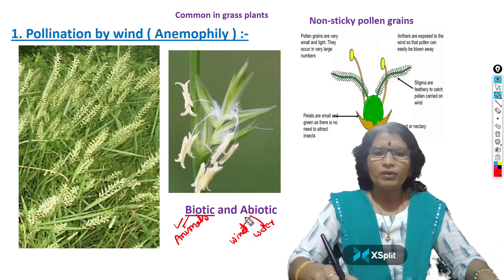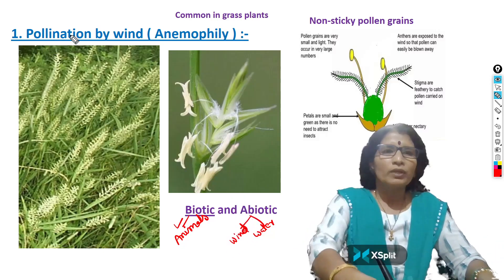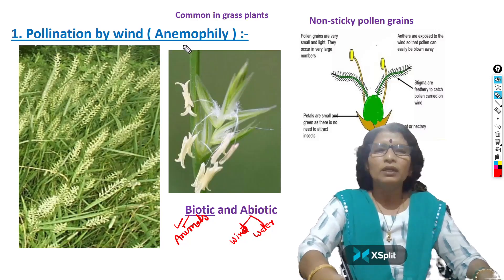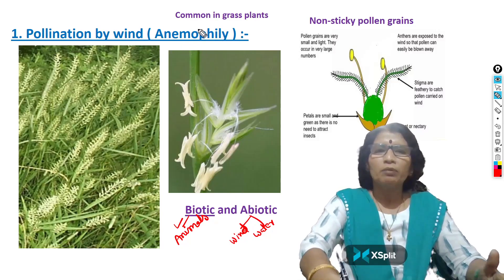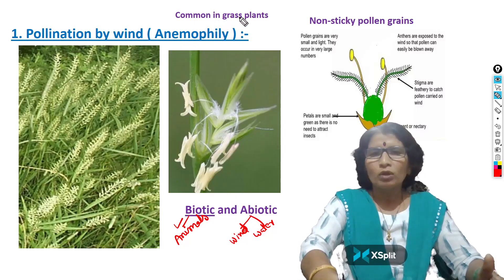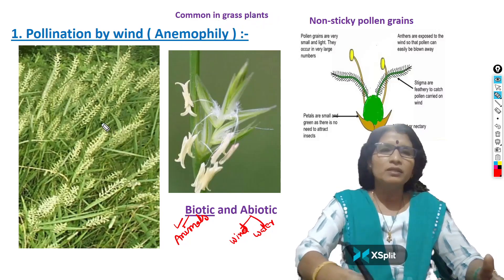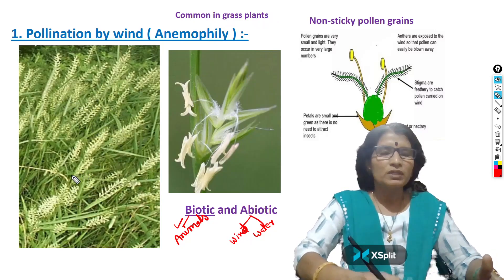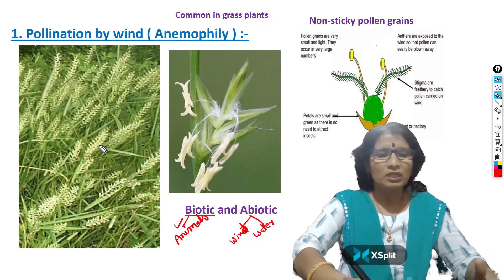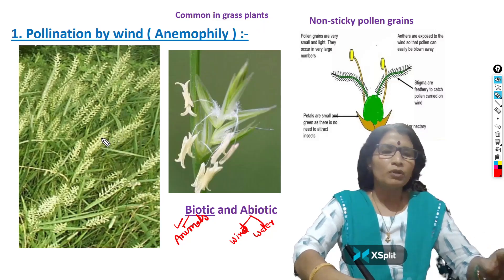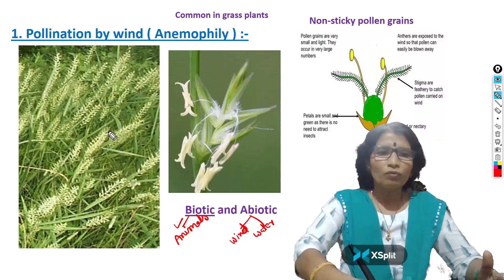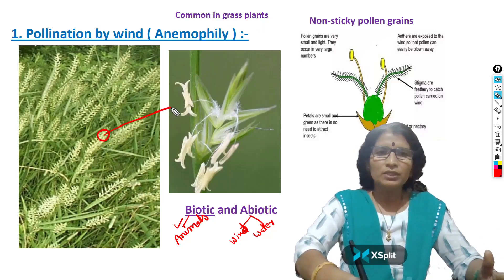Now I explain about wind pollination, which is called anemophily. Anemophily is most common in grass plants. On grass, you can see a number of inflorescences. Inflorescence means on one single axis, a number of small flowers are packed together. When we take a small portion, this is a clear magnifying view. This is the inflorescence axis, and on this axis, a number of small flowers are present.